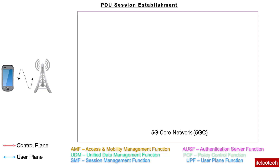In this lecture, let's understand the user plane connectivity between the user device and the core network. Previously we have seen how the initial registration is happening between the device and the core network in 5G. In this lecture we'll see how the PDU session is getting established while transferring user data. This is a similar scenario to 4G where the EPS bearer is set up between the device and the core network.